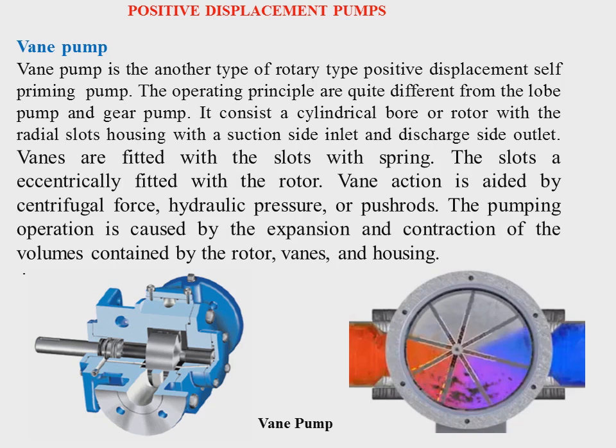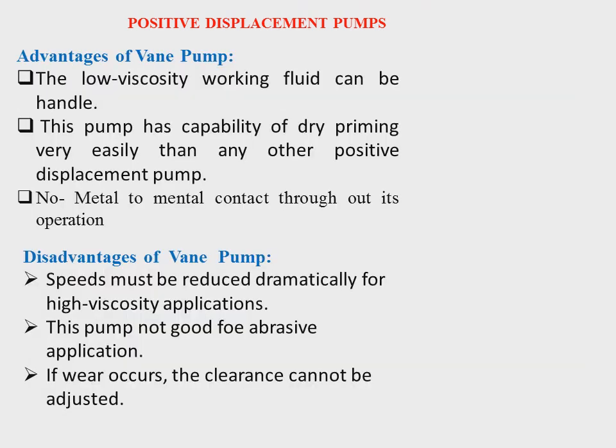The springs and slots or vanes are the main key elements to drive the flow from suction side to delivery side. At the suction side, the pressure is always minimum — a vacuum pressure is created there — which causes the flow to enter. Then the vane drives the liquid to the delivery side, where the pressure is always more than the suction side.